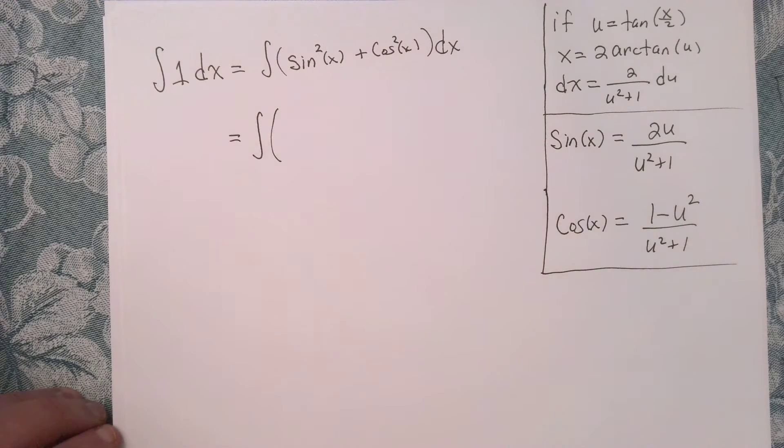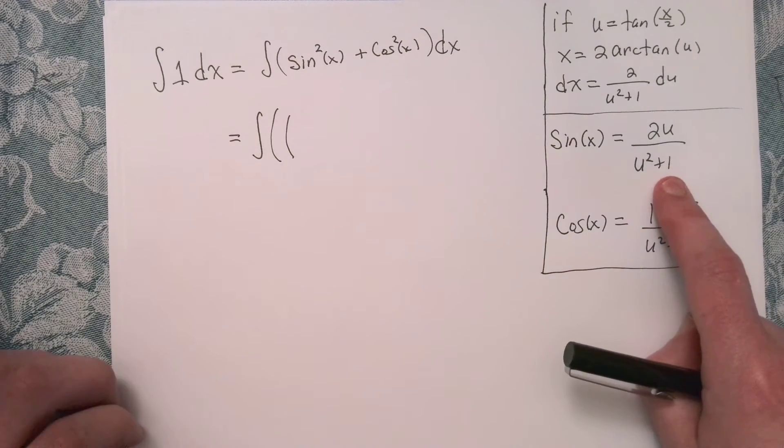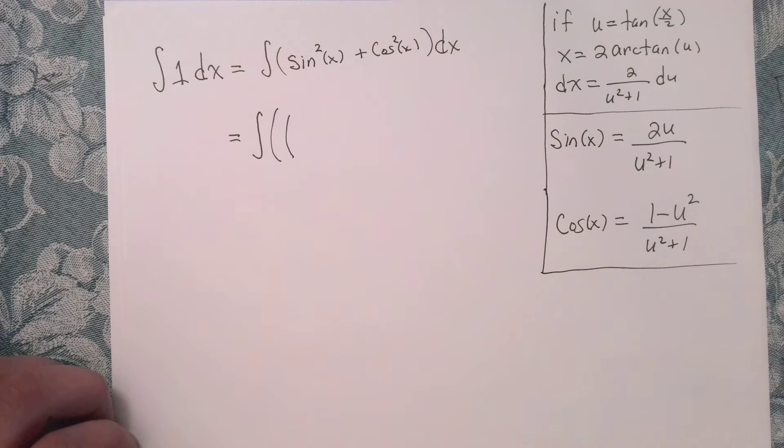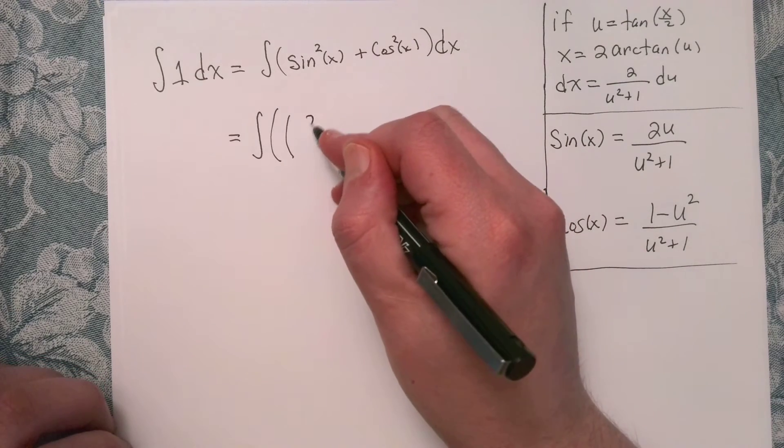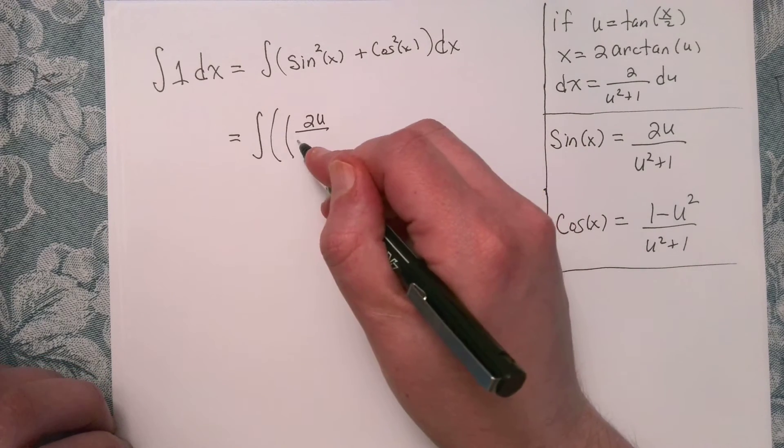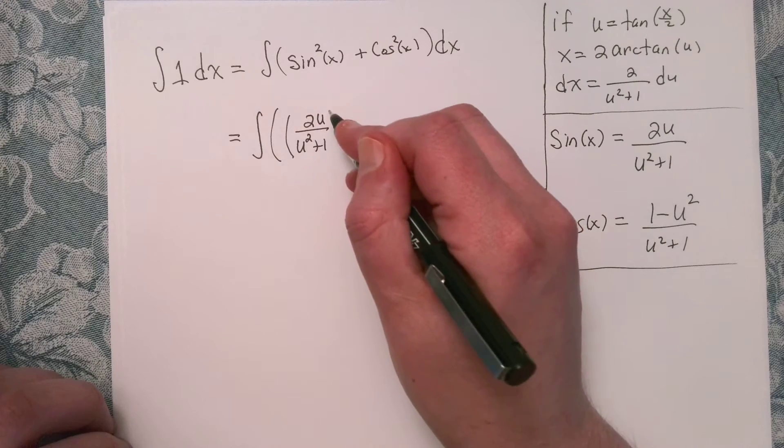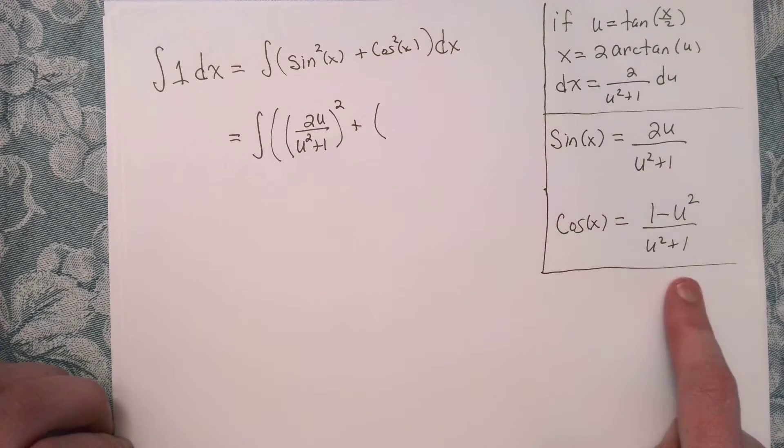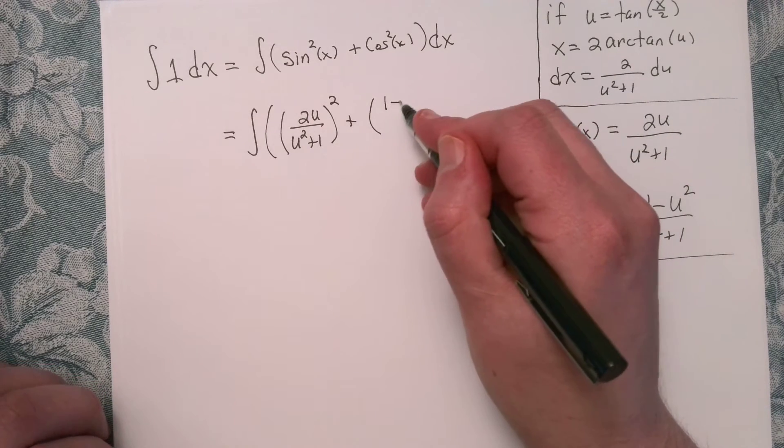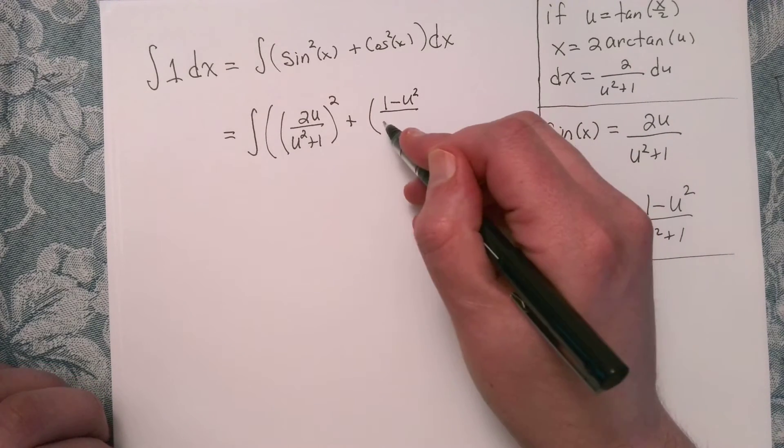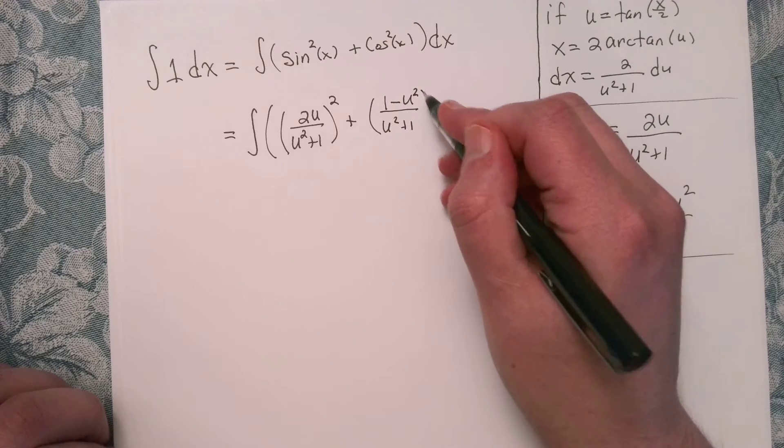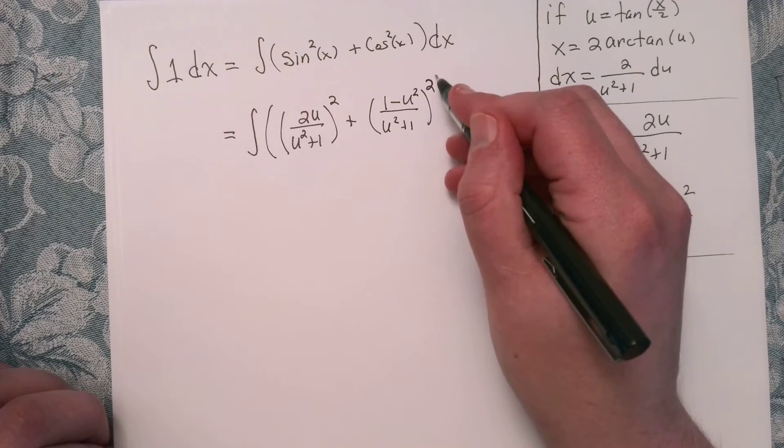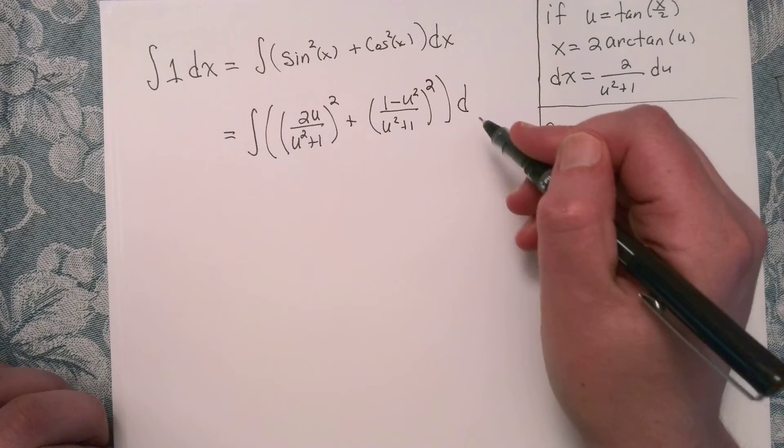All right, let's see what we have here. Okay, so sine of x is exactly this quantity. So yeah, let's plug that in for sine of x. So that's going to give us, it looks like, 2u over u squared plus 1 quantity squared plus, and then of course our cosine, which we have here. So we've got 1 minus u squared over u squared plus 1 quantity squared.